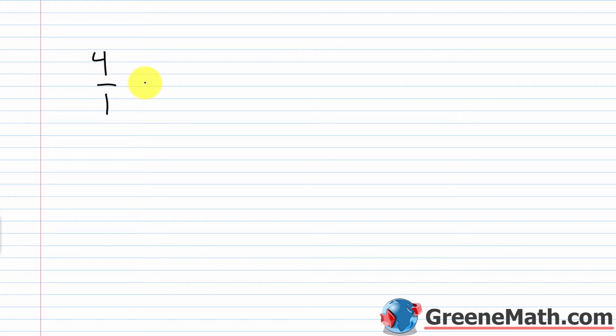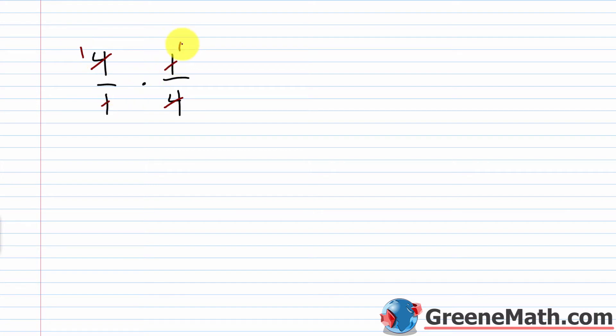Here's a more advanced example. The number 4 can be written as 4 over 1, and its reciprocal is 1 over 4. Multiplying them together, this 4 cancels with that 4, and you have 1 times 1, which equals 1. So again, a number times its reciprocal is always 1.